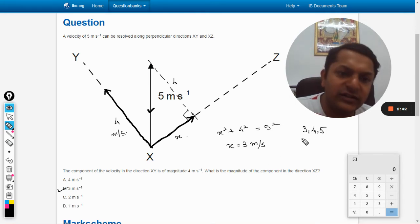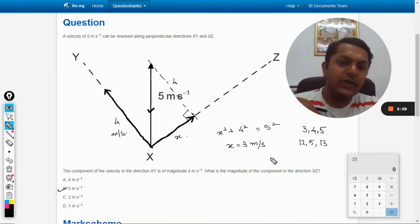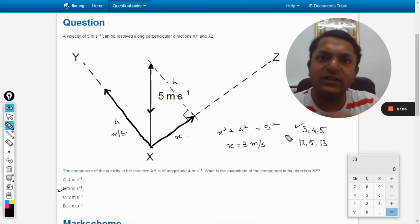There are others also, like one is 12, 5, and 13. These are known as Pythagorean triplets. You might have studied them in mathematics in lower standards.